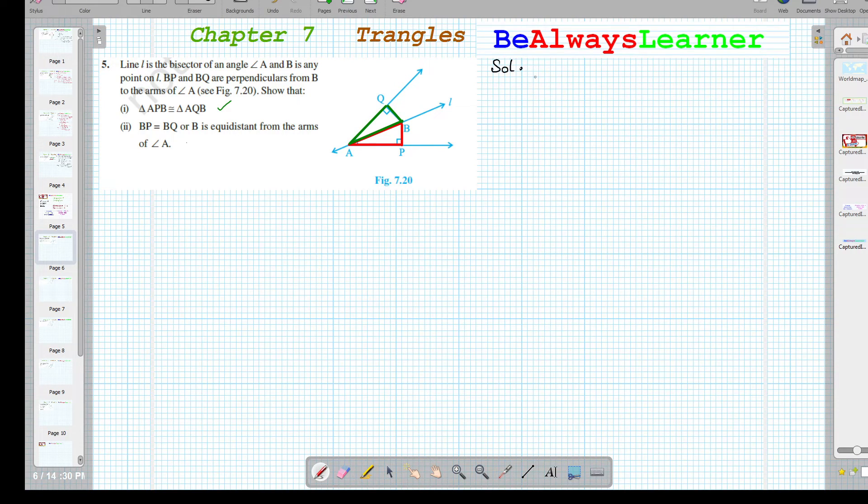The solution is we are having two triangles. The first triangle is the red triangle APB and another triangle is the green triangle AQB. In these triangles, what do we have?